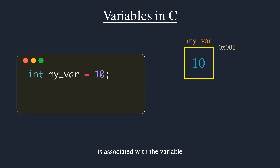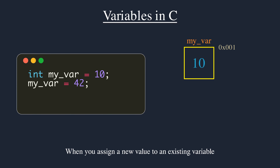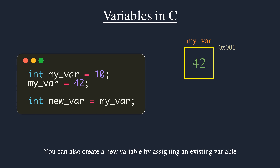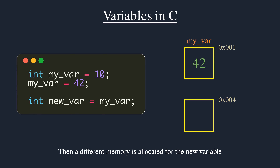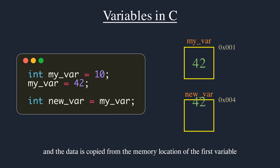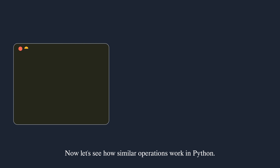You can think of a variable as a container holding the value. The type of the value — whether it is an int, float, or string — is associated with the variable. When you assign a new value to an existing variable, the new value replaces the old value in the same memory location. You can also create a new variable by assigning an existing variable of the same type; different memory is allocated and the data is copied.